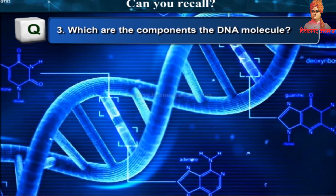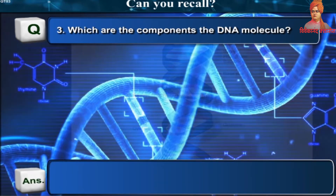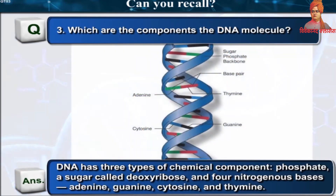Which are the components of the DNA molecule? DNA has three types of chemical components: phosphate, a sugar called deoxyribose, and four nitrogenous bases — adenine, guanine, cytosine and thymine.